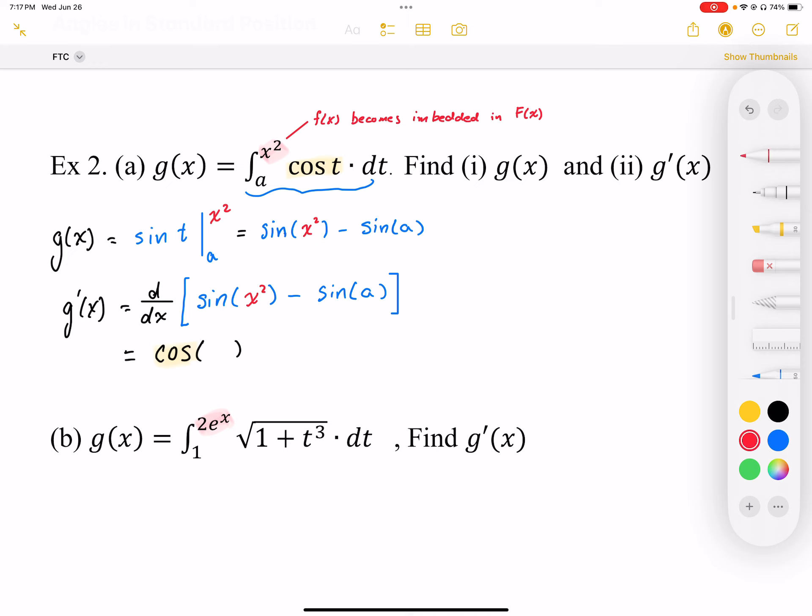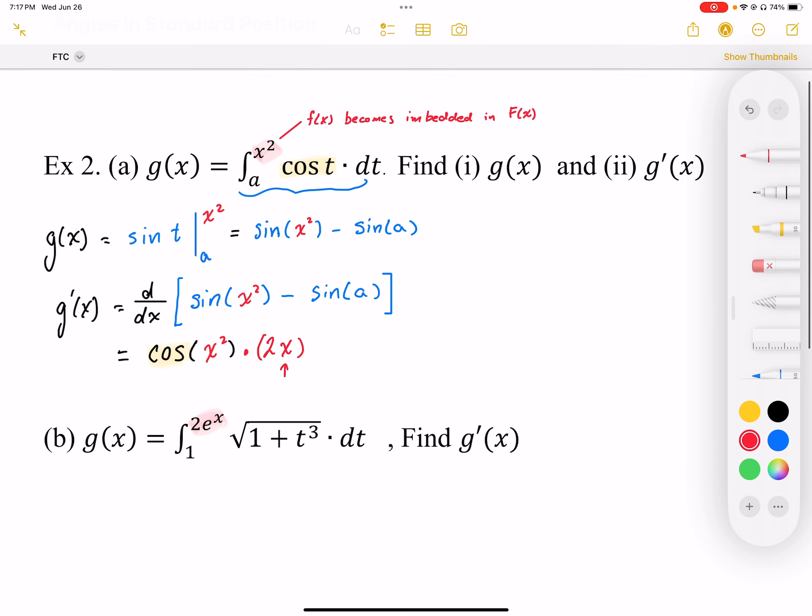However, now that I have an embedded function, because the endpoint is a function, it ends up embedded inside the cosine. I have to apply chain rule and differentiate the x squared into 2x. So this is applying the chain rule. And this is a constant, so this differentiates to zero.